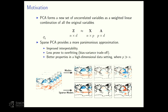Sparsity is often used to achieve a better bias-variance trade-off. As an example, with climate data, PCA modes extracted are kind of global modes, whereas sparse PCA modes are more localized and easier to interpret.